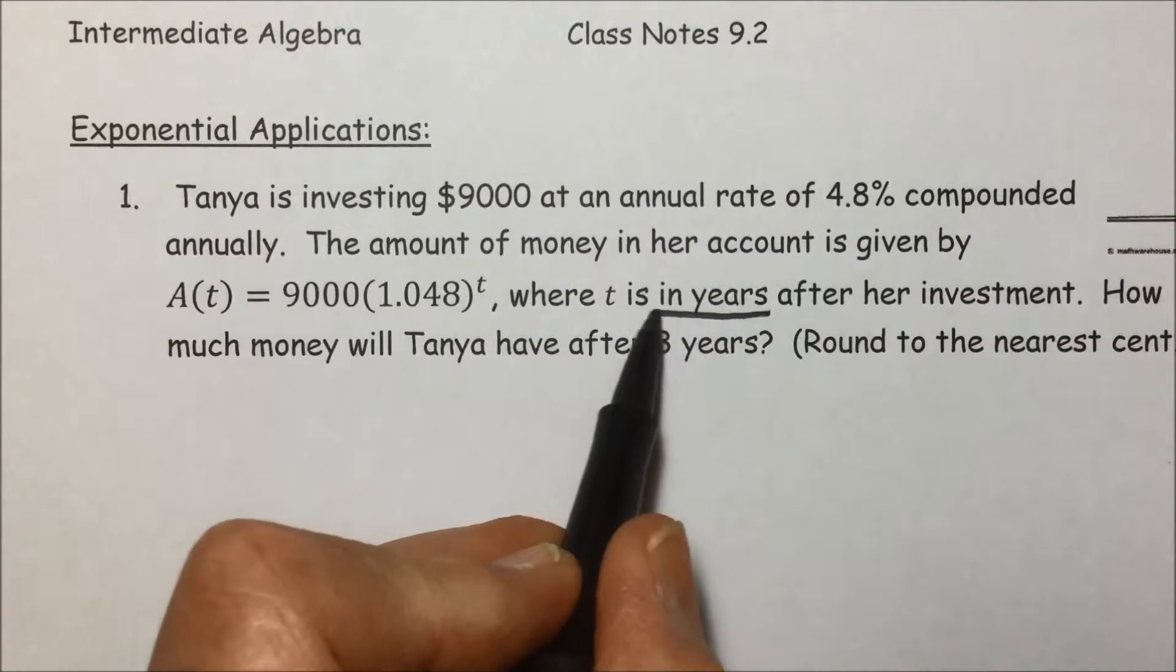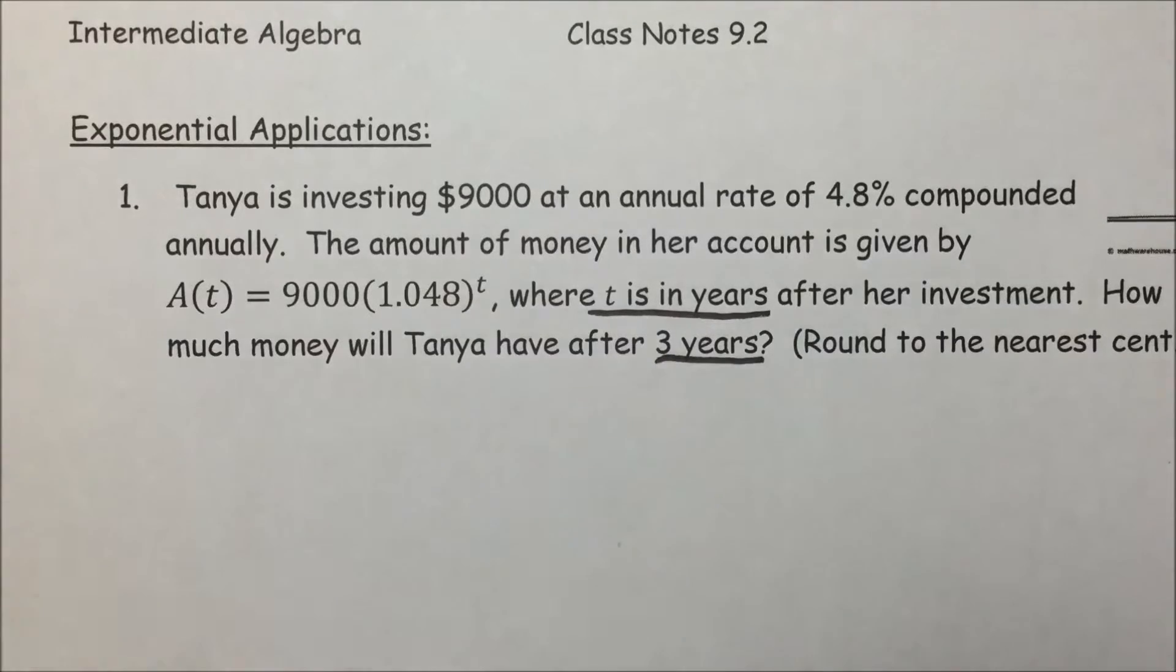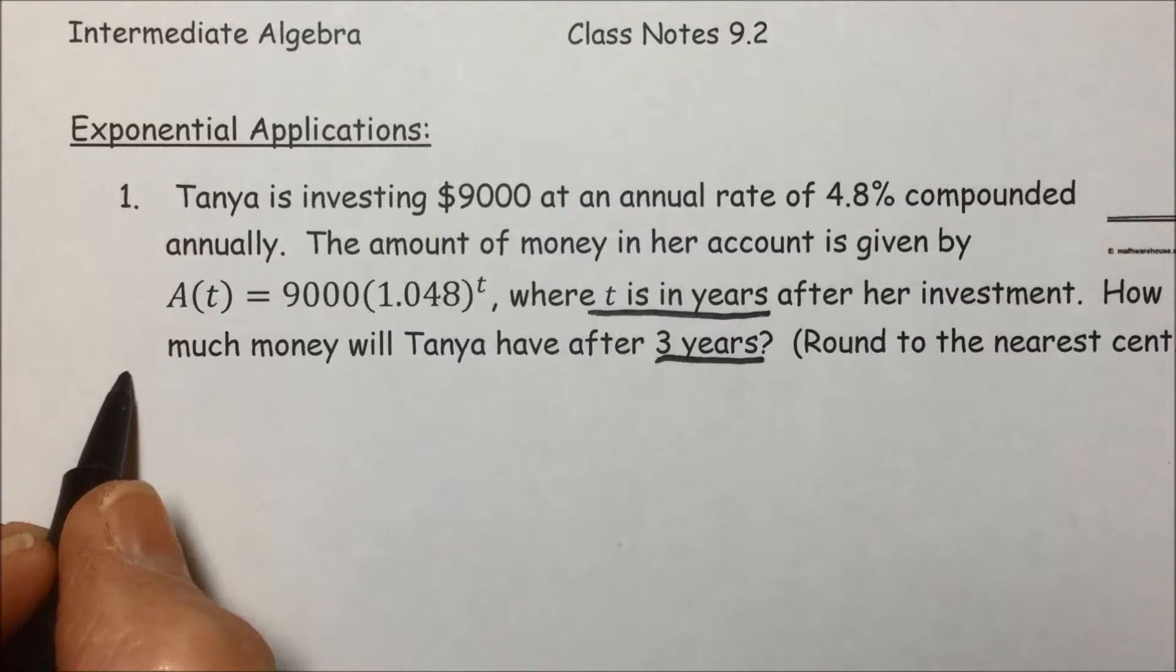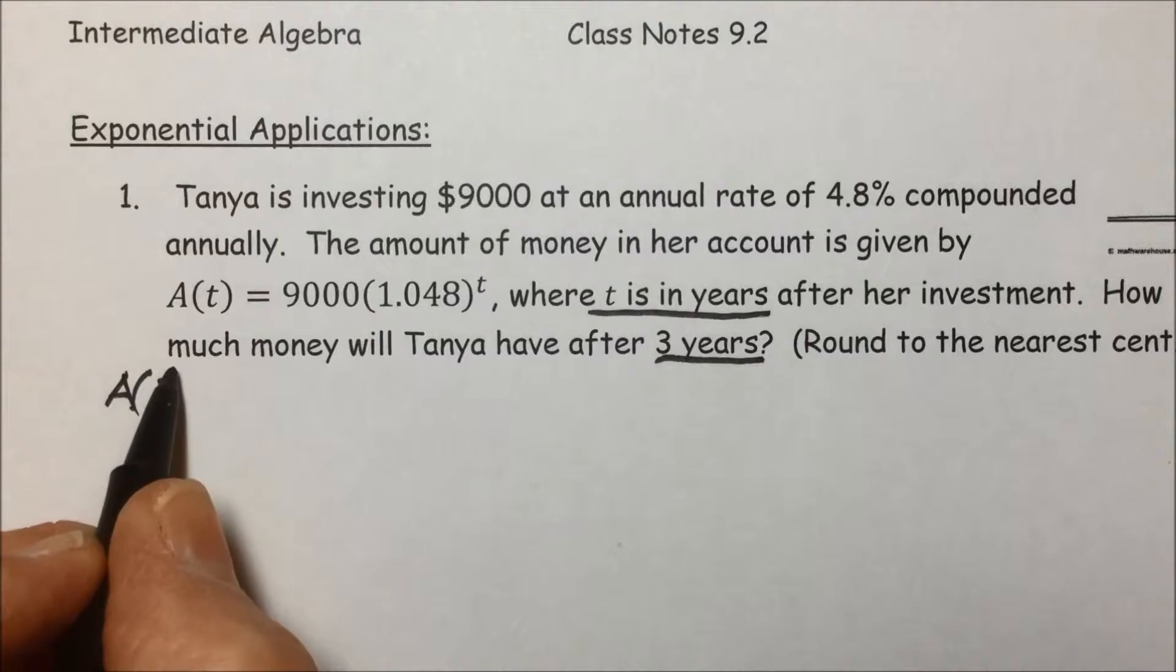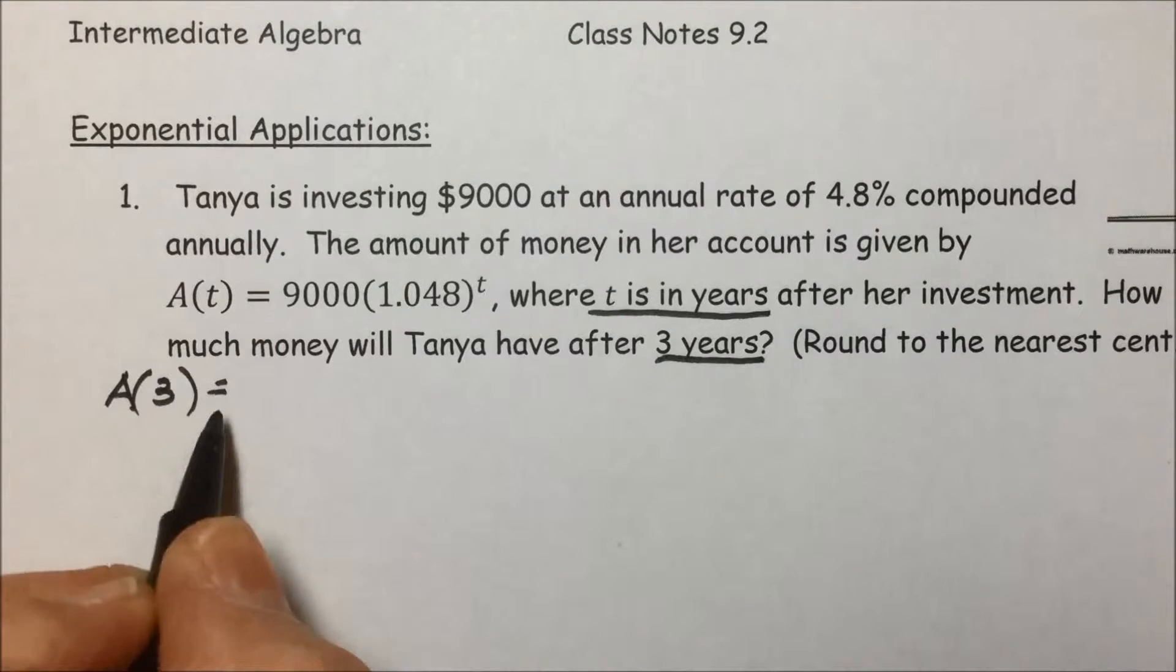They're telling us that T is in years. They're asking us what the value will be after specifically 3 years. So our variables agree, so we're calculating the balance when T is 3, in other words, after 3 years.